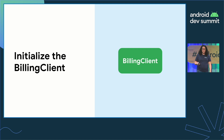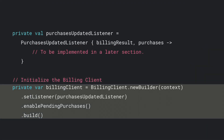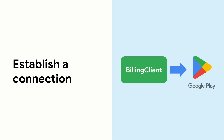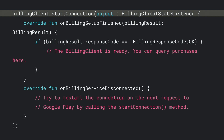The initialization of the billing client has not changed since the previous version. You will still call a new builder to create the client and set a listener to the PurchasesUpdatedListener, which will be called every time there are new purchases in your app. After you initialize the billing client, you'll establish a connection with Google Play just like before, using the same startConnection call, implementing callbacks for onBillingSetupFinished for successful connections and onBillingServiceDisconnected when the billing client loses connection. It's really important that the connection is in a healthy state before entering any user-critical flows.